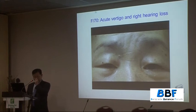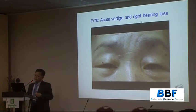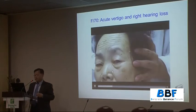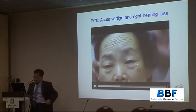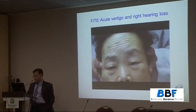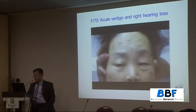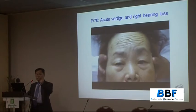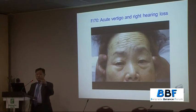Let's start with this 70-year-old woman who presented with acute vertigo and right hearing loss. You can see a little bit of left-beating spontaneous nystagmus, and head impulse to the left is normal. But head impulse to the right is definitely abnormal. This patient shows spontaneous nystagmus beating to the left, impaired head impulse to the right, along with hearing loss on the right side and vertigo.